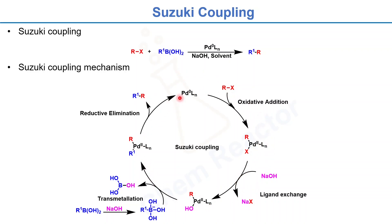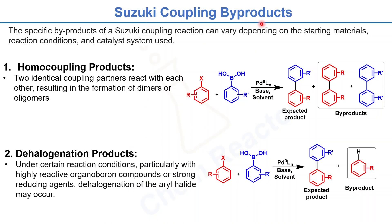Looking at the intermediates, there are many possible byproducts that can be formed in this reaction. The specific byproducts of Suzuki coupling can vary depending on the starting materials, reaction conditions, and the catalyst used. We will go through them one by one.